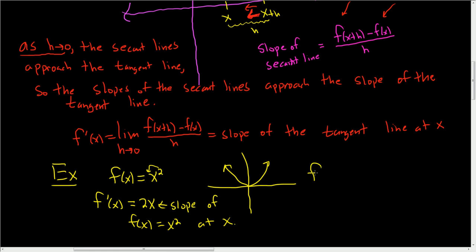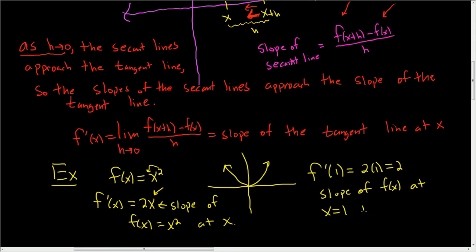To make it more concrete, let's look at f prime of 1. We plug it into our slope formula — it's a slope function — and you get 2 times 1, which is 2. So the slope of the tangent line to the graph of f at x equals 1 is 2. The tangent line at x equals 1 looks something like that, and 2 is the slope of this line.